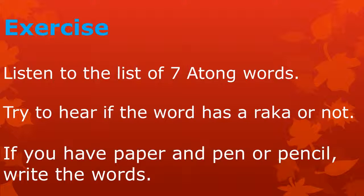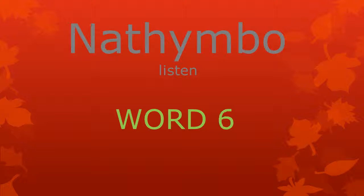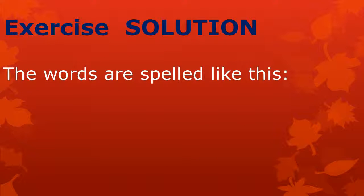I will say seven Atong words. Try if you can hear if the word has a RAKA or not. If you have a piece of paper and a pen or pencil, you can write the words. I will say every word two times. Now listen: RONG, TAU, TAU, WAL, CHONG SU, BITEN, WAL. That's it. Did you hear that? Now let me give you the solutions.